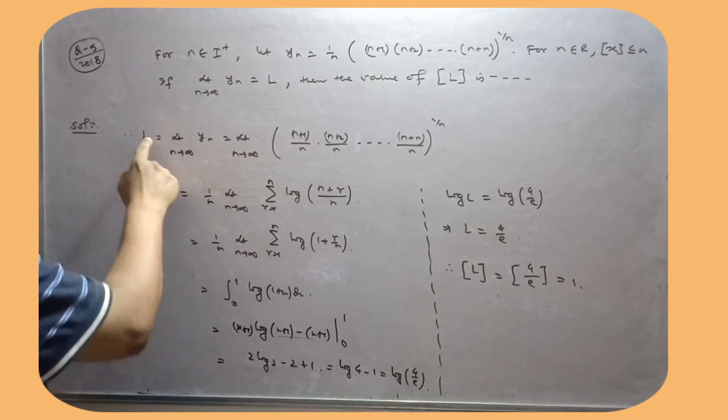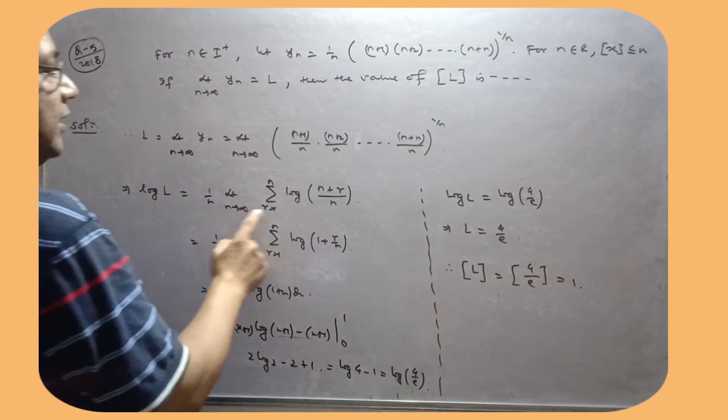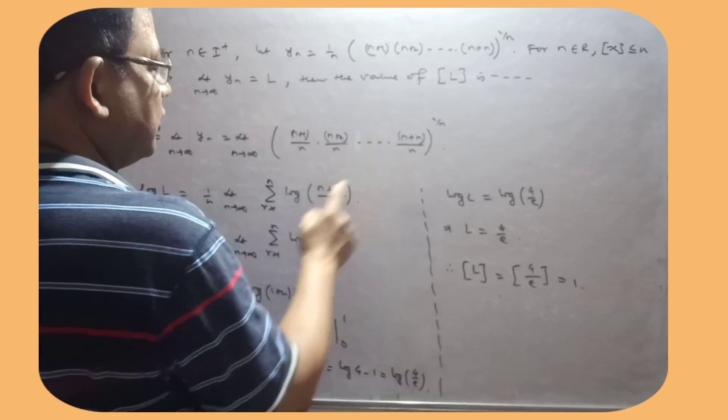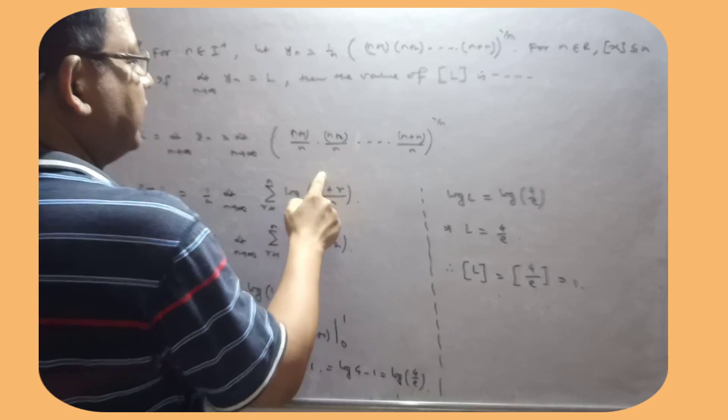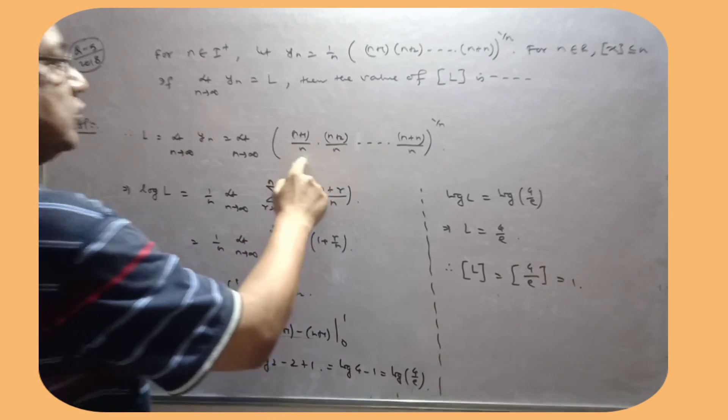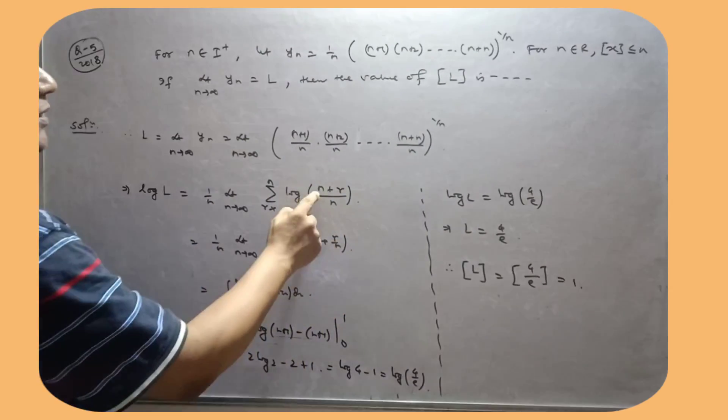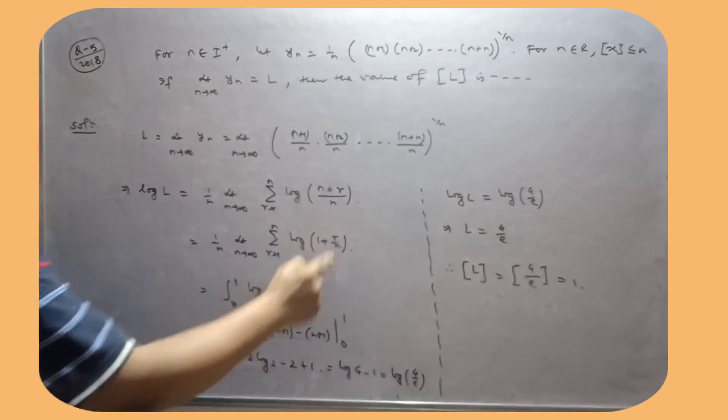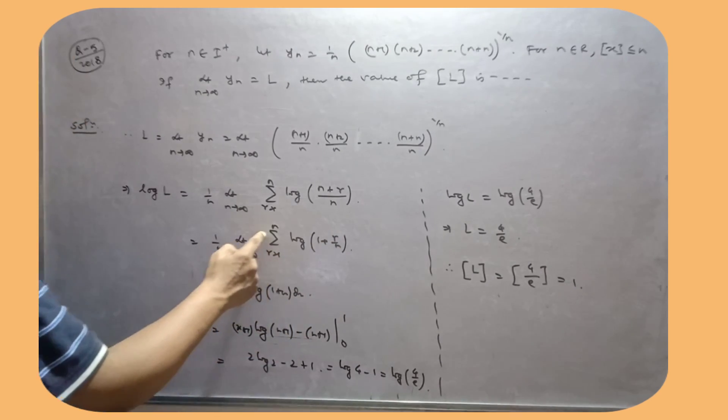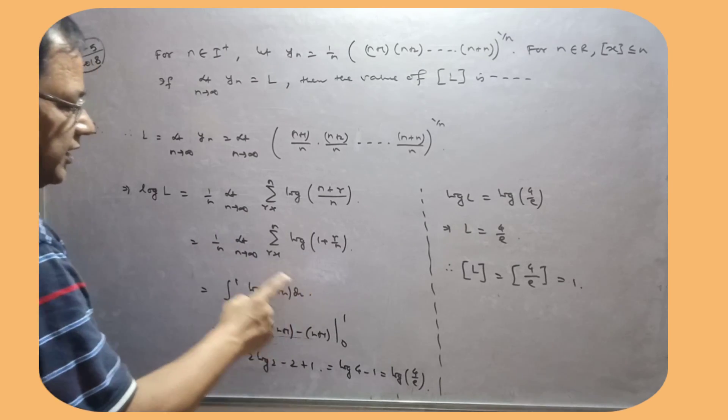Abhi dono side log apply karo, log N is equal to 1 by N limit N tends to infinity. So yeh kya hoga log of this plus log of this plus log of this, ish niya summation se likha hai. Jo vary kar raha hai, 1 to N, that is the values of R hai. And jo fixed hai, woh toh fixed hai. Abhi isko alag-alag kar liya, 1 plus R by N, yeh kya tha? R by N ka jagah pe X likha hai, summation ka jagah pe integration, 1 by N ka jagah pe DX.